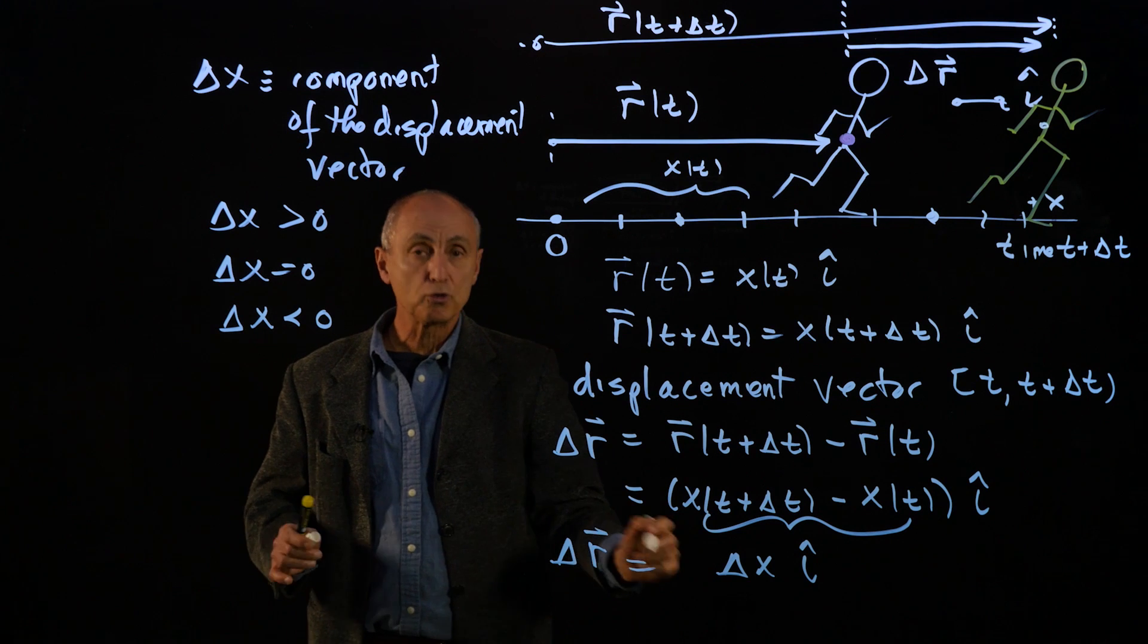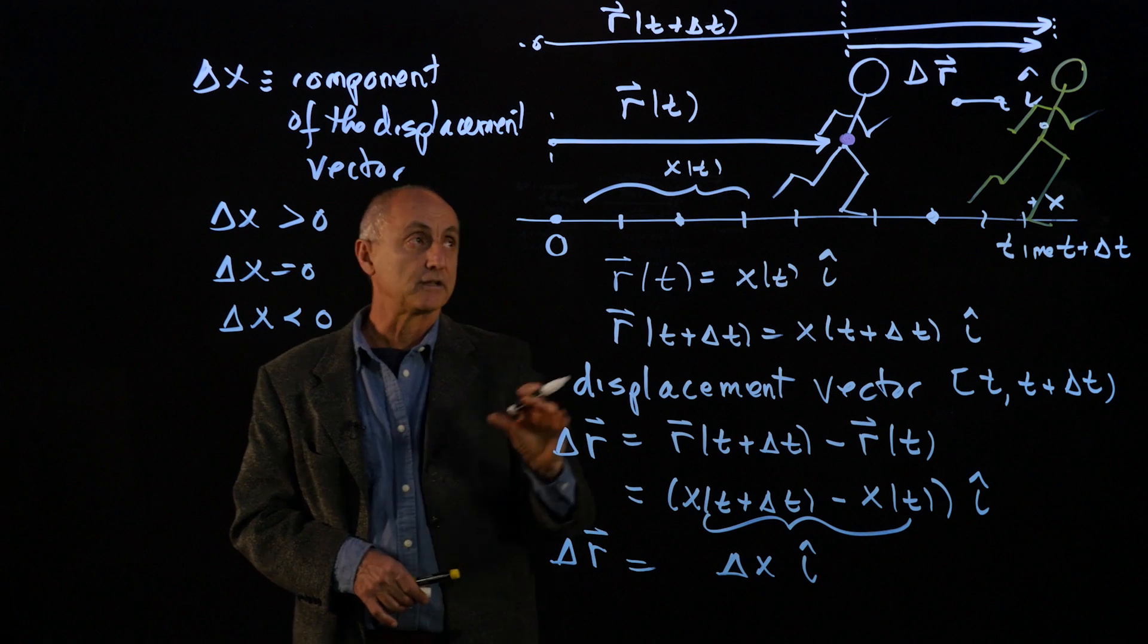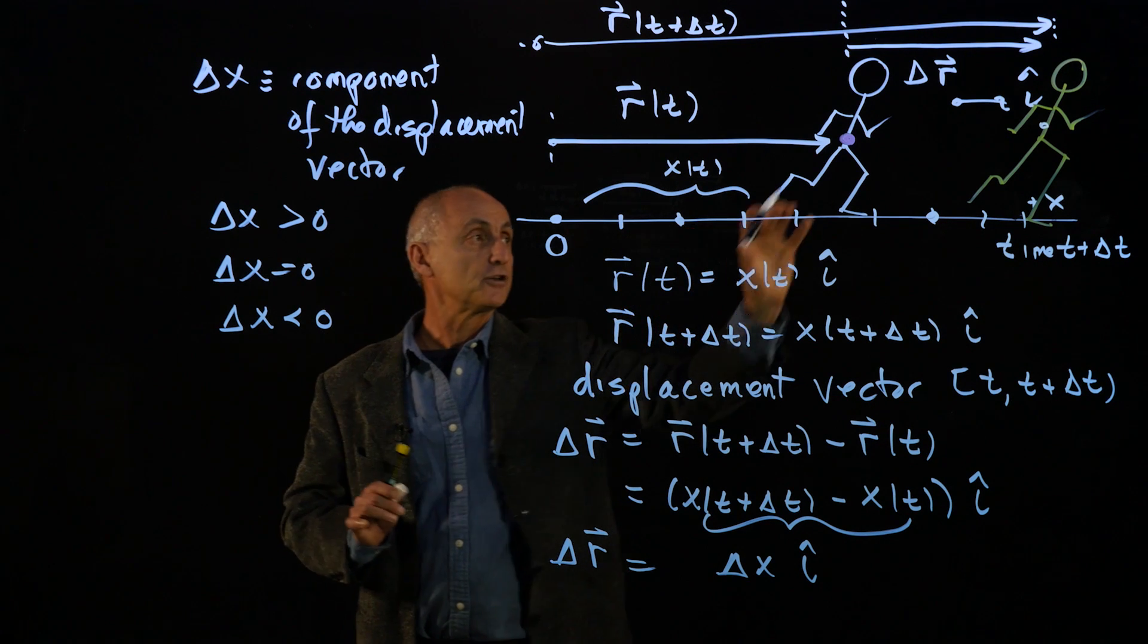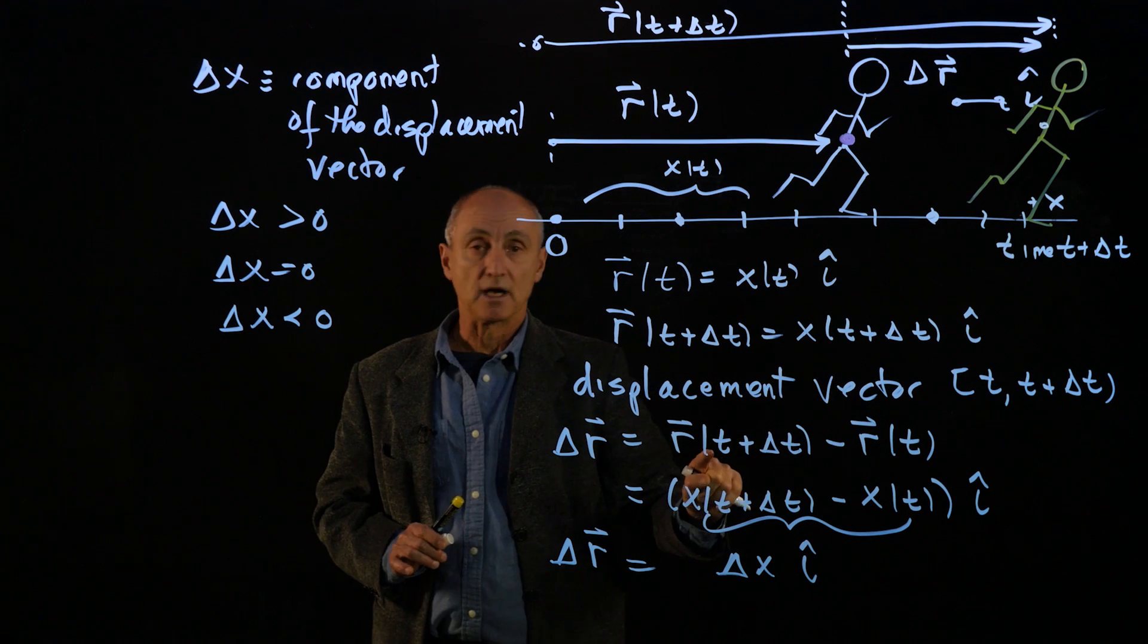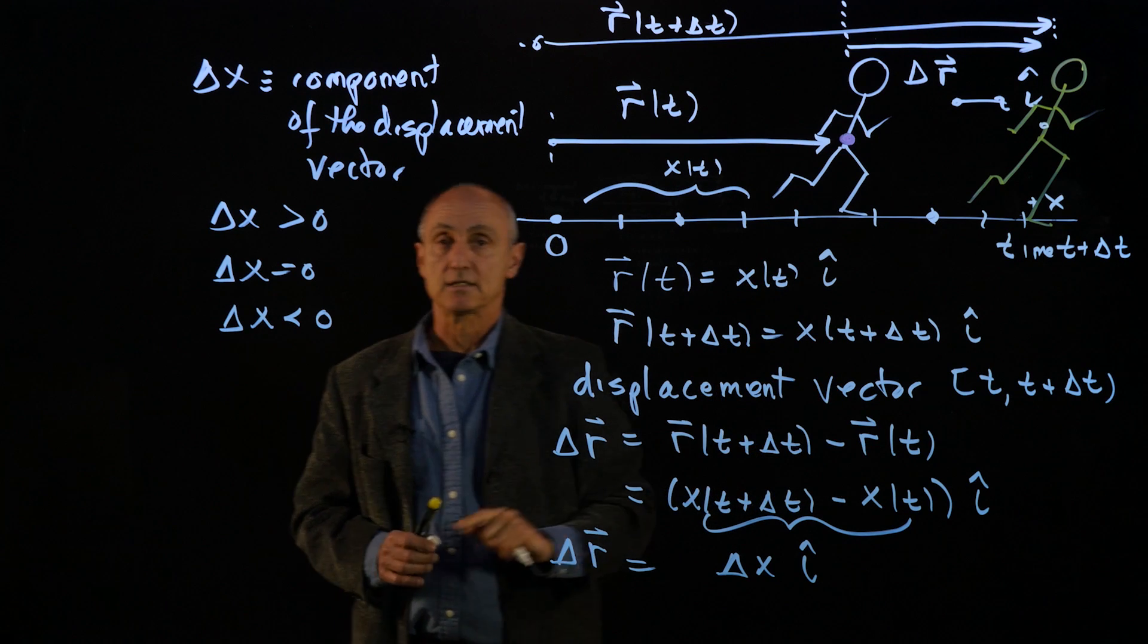And so this is our crucial displacement vector that describes only the difference in positions between the person between time t plus delta t and time t.